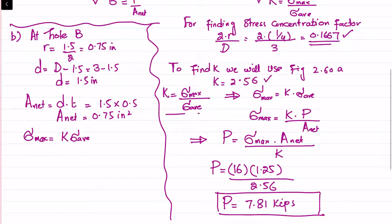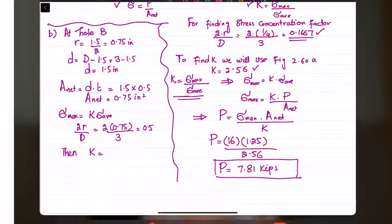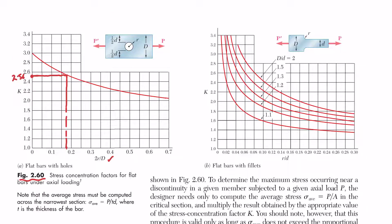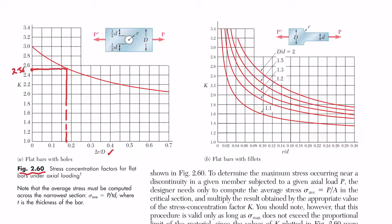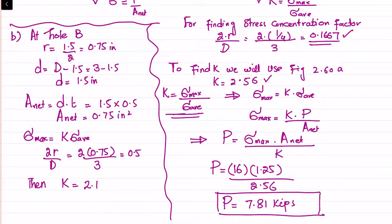For hole B, to find K we need 2r/D: 2 times 0.75 divided by 3 equals 0.5. Using Figure 2.60a and locating 0.5 on the graph, projecting horizontally gives K approximately equal to 2.16.